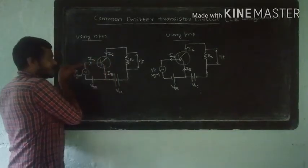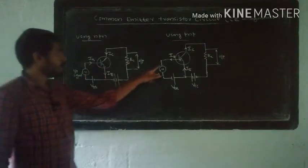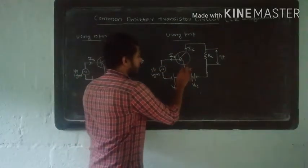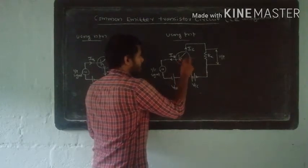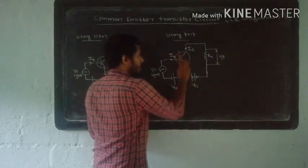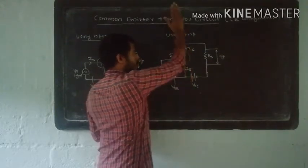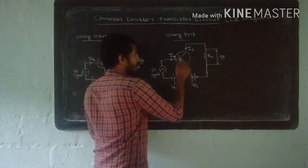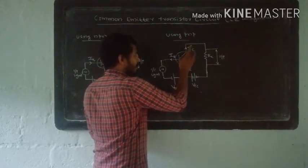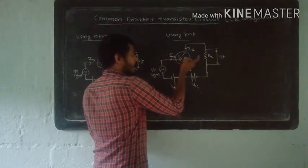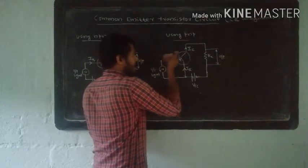Towards the base current, we can see the current direction. The emitter current has its own direction. IE and IC are upward in direction. If IE equals IB plus IC, and IB is flowing into the transistor, IE flows outward.